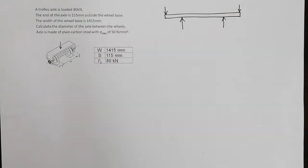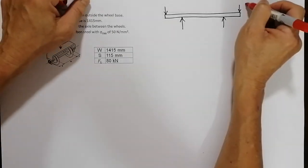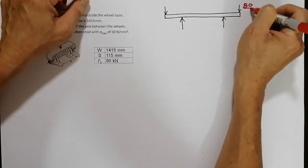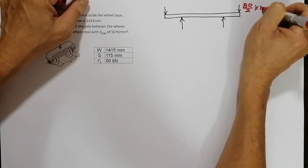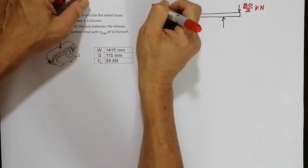Now let's put in the values. Given that the load is loaded with 80 kilonewtons, so this will be 80 divided by 2, and the other half is over here.